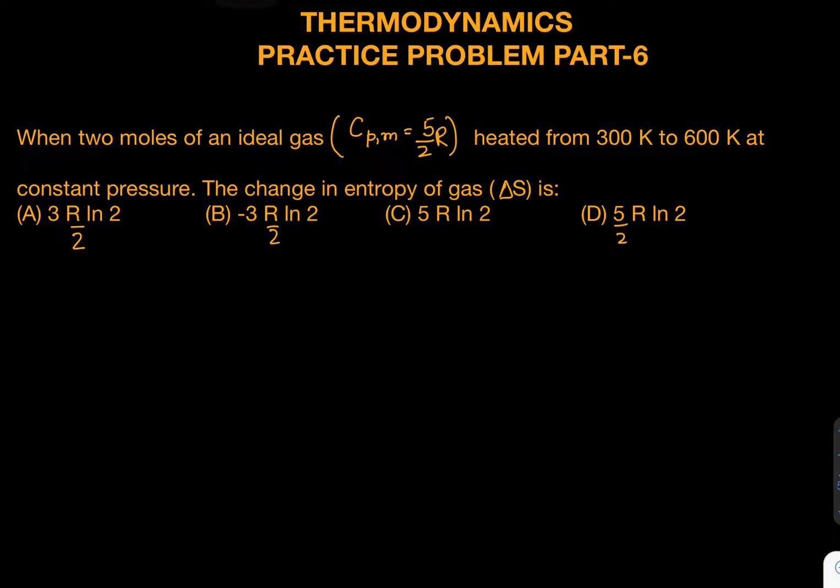Let's see this question. When two moles of an ideal gas with Cp,m—what is Cp,m? Cp,m is molar heat capacity at constant pressure. The same thing can be given at constant volume as well. The question is: find out entropy change ΔS when temperature is modified. We can use a direct formula, but I want to revise the whole approach first.